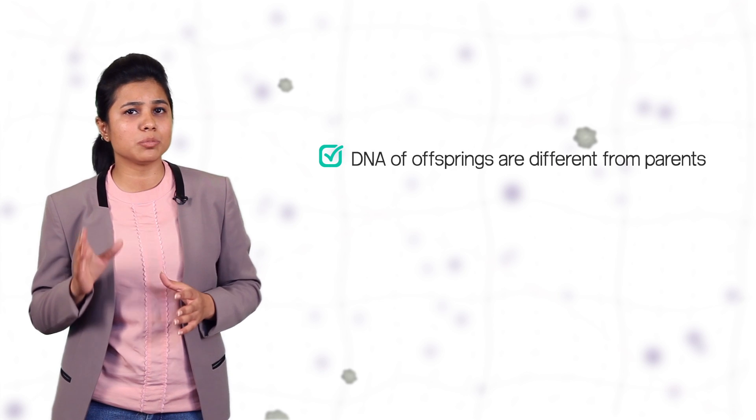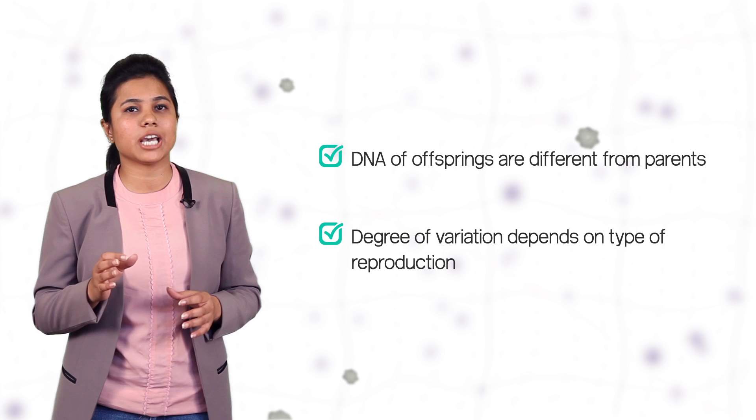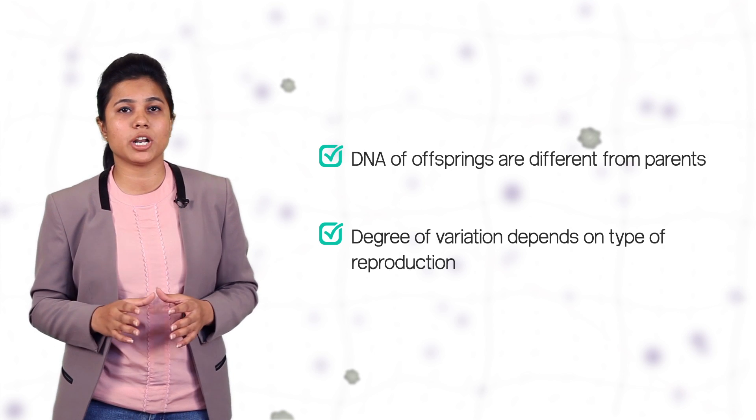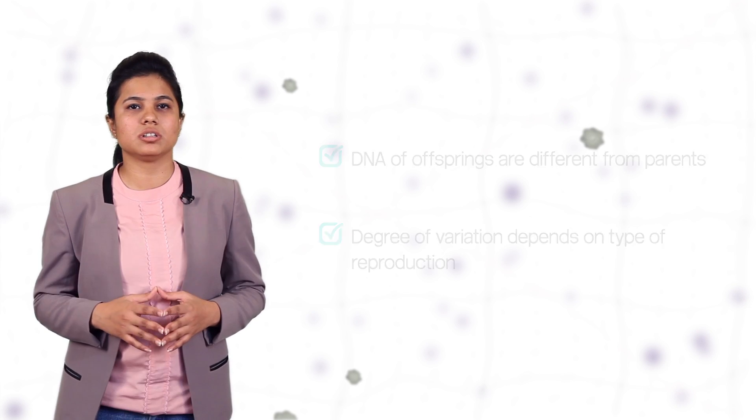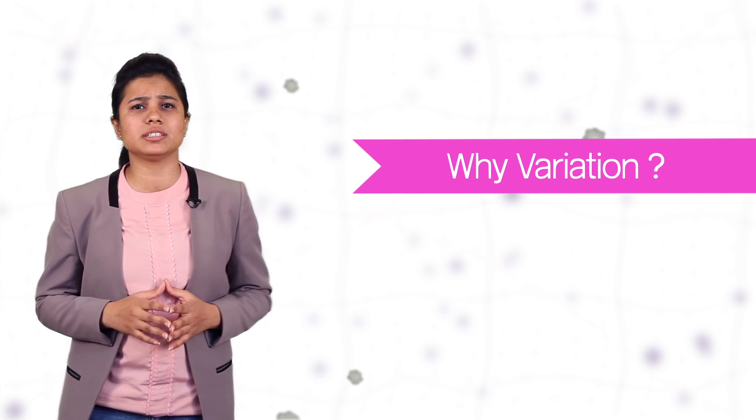Now, the offsprings which are formed from the parents have DNA a bit different from the parent DNA and the degree of variation depends upon the type of reproduction. It means during the process of reproduction, exact copies are not created and there is some variations. Now, the question is why variation takes place and why it is necessary? Let us try to understand this.